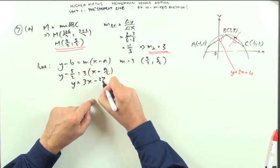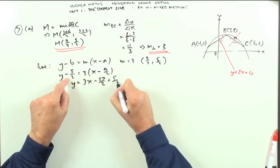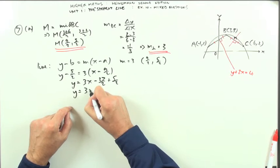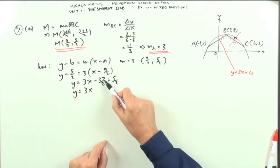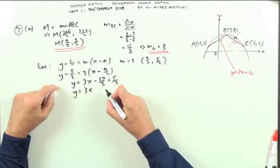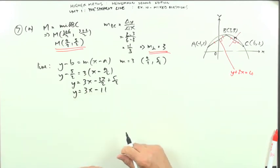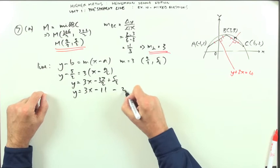It's not going to be as bad as it looks because these twos will cancel when they come over. Y equals 3x minus 27 upon 2 plus 5 upon 2. That's minus 22 upon 2, and 22 upon 2 is 11. So y equals 3x minus 11. I'll call that equation 2.